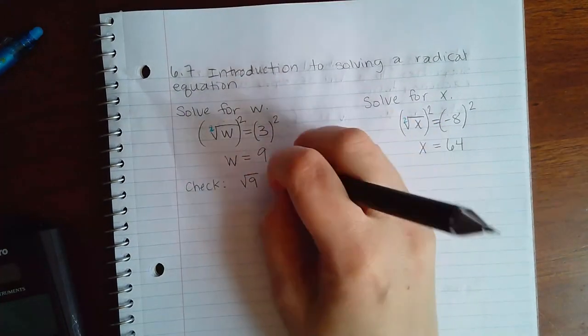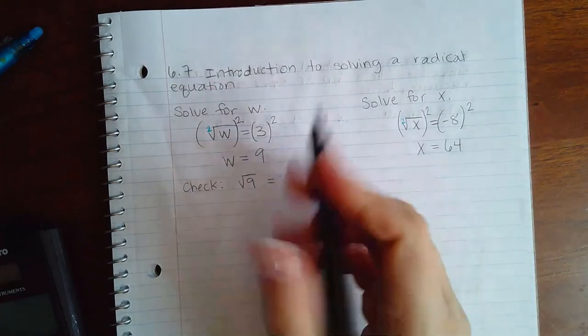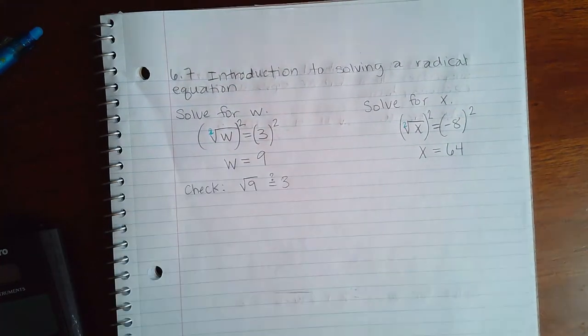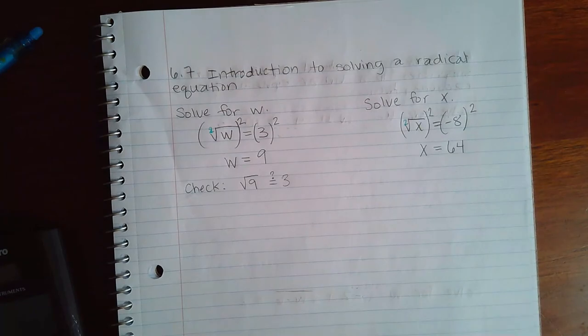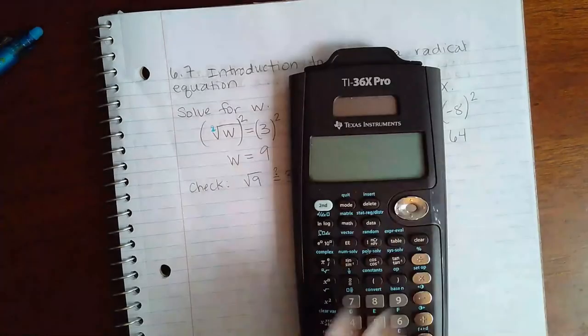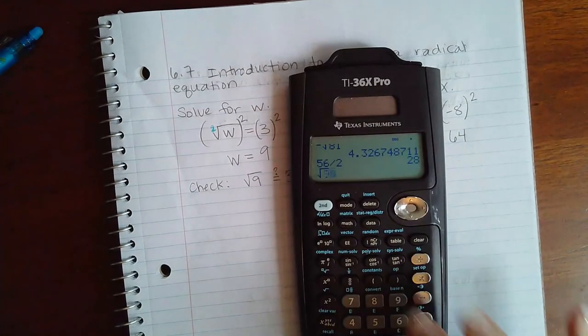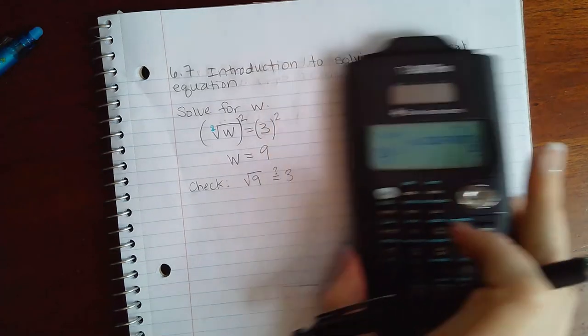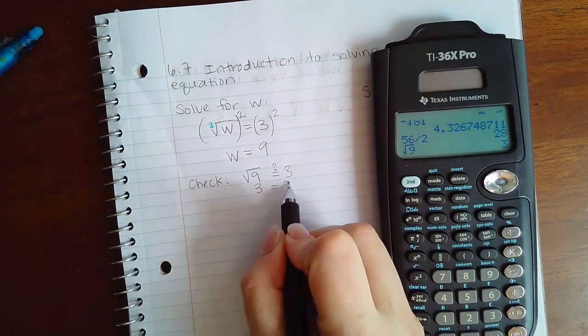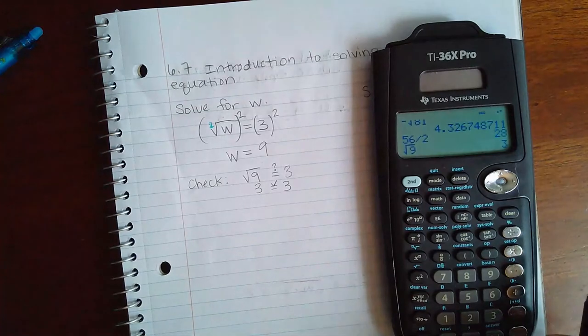Because that was what the equation was: square root of w equals 3. So is this true is the question. Now if I type square root of 9 in my calculator I do get 3, so yes they are equivalent, which means 9 is the solution.